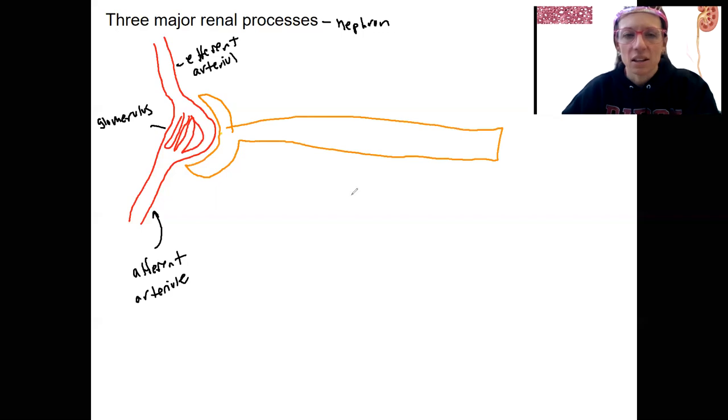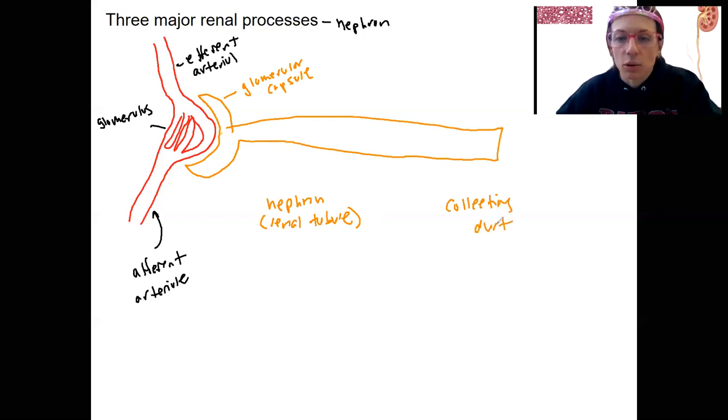So let's just draw it like that. This is our glomerular capsule. We've got our nephron, renal tubule, and then our collecting duct. So the three processes that are going to occur in this structure here simplified in this image. One, what happens here? Filtration.